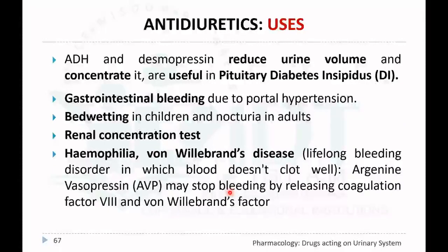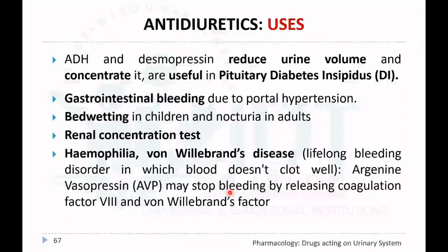The uses of anti-diuretic hormone and its analogues, including vasopressin, desmopressin, lepressin, and other drugs: they reduce urine volume and concentrate the urine, which is very useful in cases of pituitary diabetic insipidus. This condition disturbs fluid balance; the patient experiences excessive thirst and excessive urination, which leads to fluid depletion.